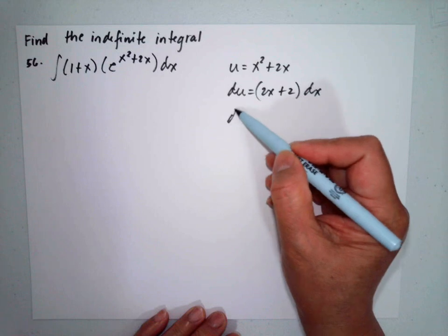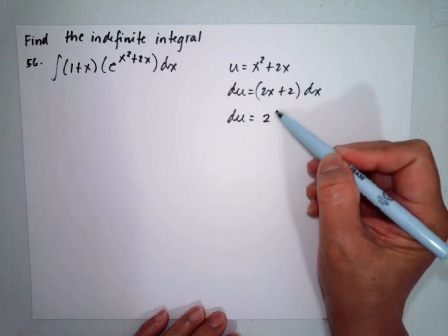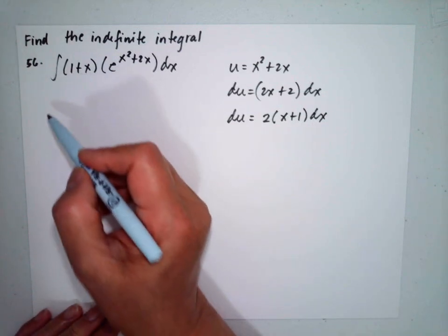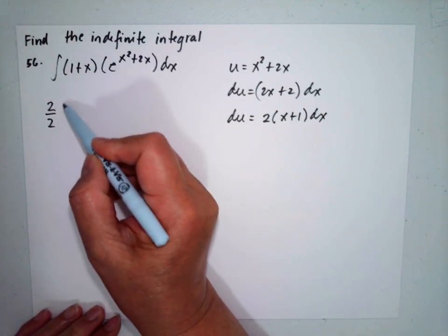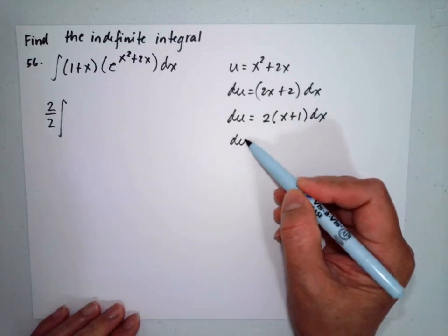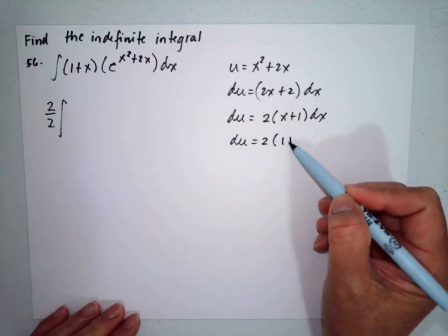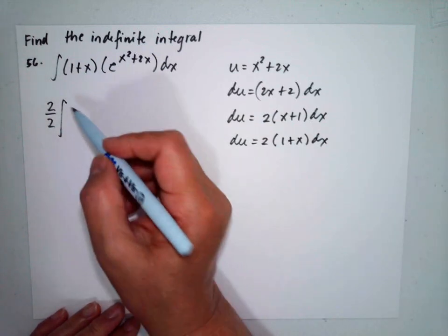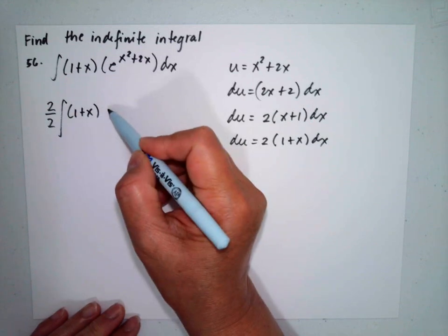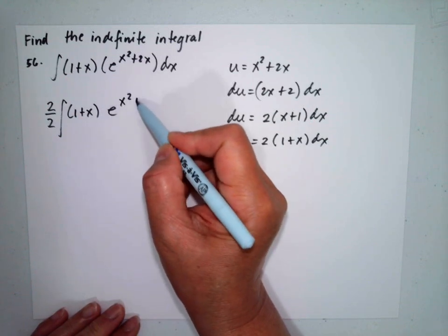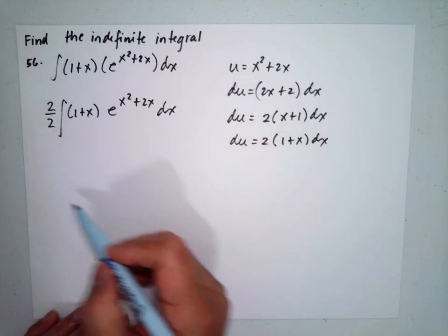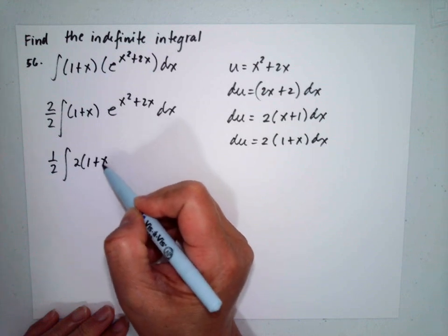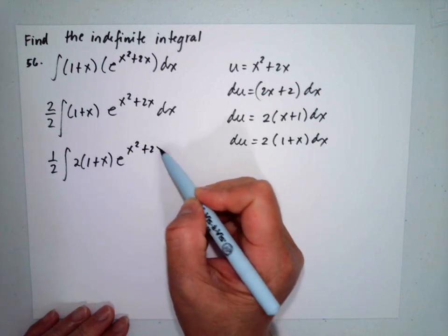So du is equal to 2(x plus 1) dx. As we can see, a factor of 2 is missing, so we introduce 2 over 2. The integral can be rewritten as 1 plus x — since it's addition, we can switch their position — giving us one half the integral of 2(1 plus x) e to the x squared plus 2x, dx.